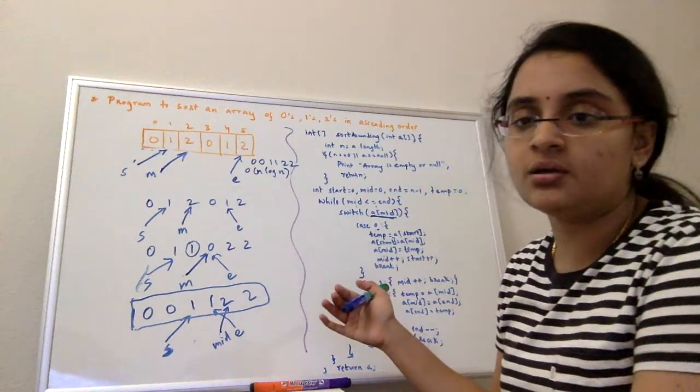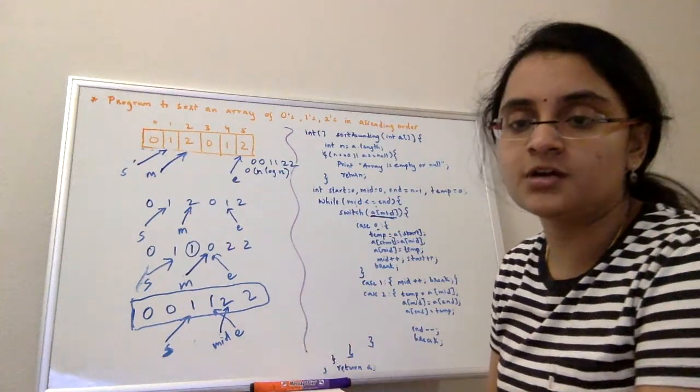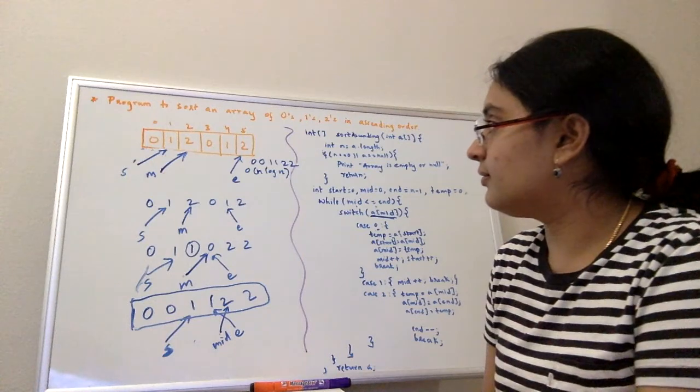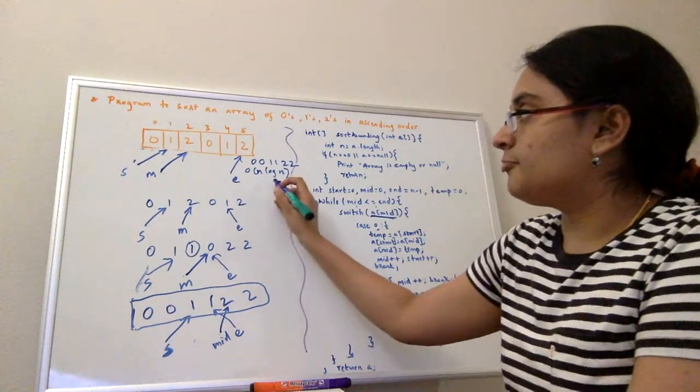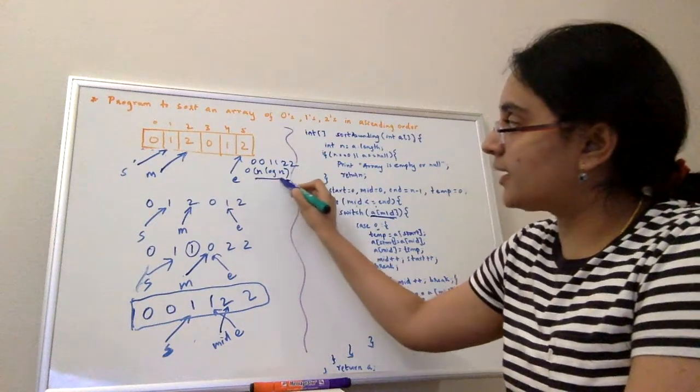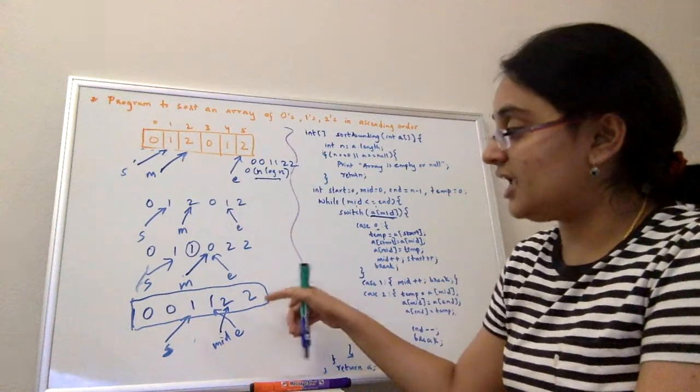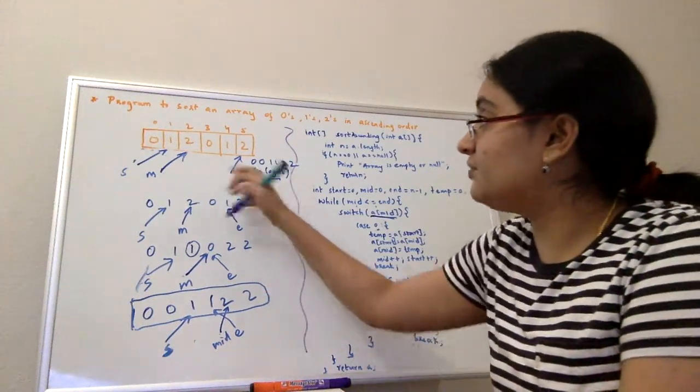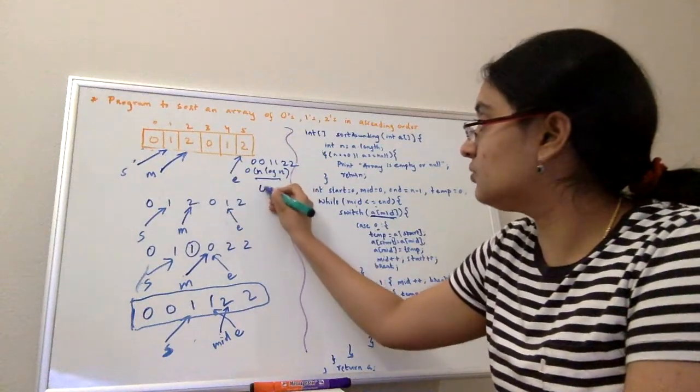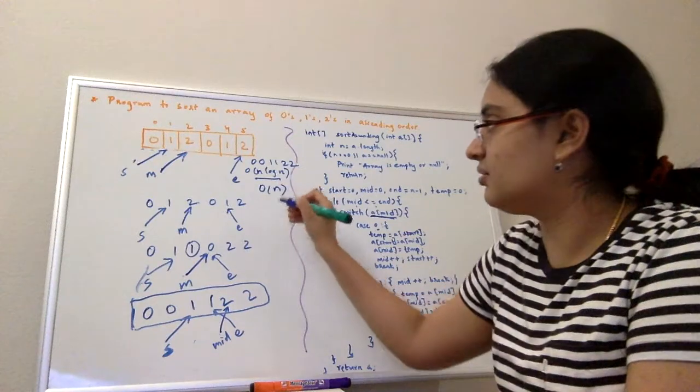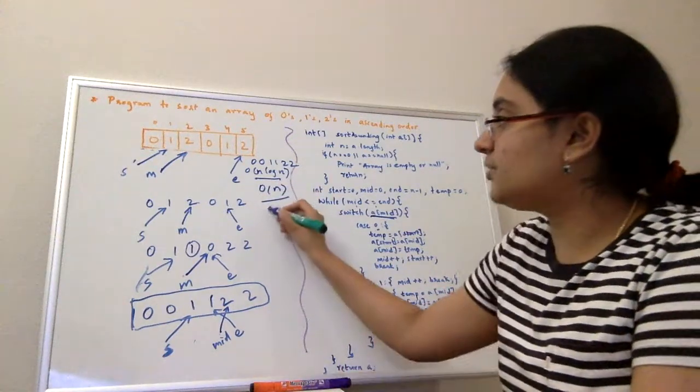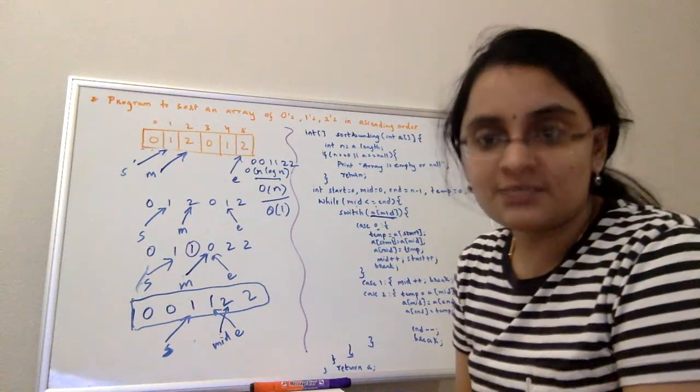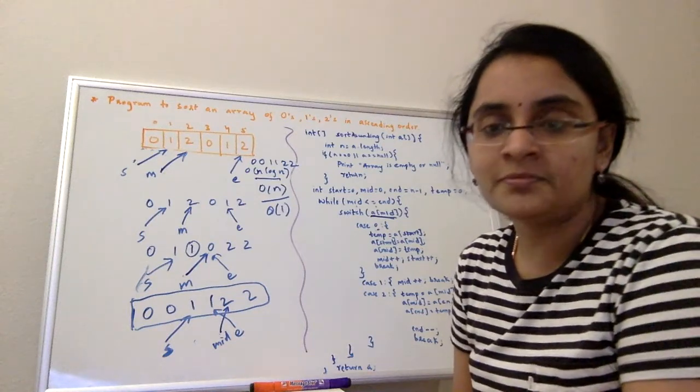Like I discussed earlier, sorting algorithms take O(n log n), but because we used an in-place sort by swapping the numbers and we are traversing the array only once, the complexity is O(n). And we are not using any extra space, so the space complexity is constant. So this is my approach to this problem. Thank you.